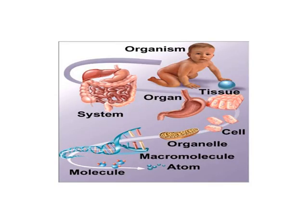Here's a picture of the hierarchy of complexity. We have a baby as an organism, then different organ systems — here showing the digestive system. Organs make up the organ system, then organs are made up of tissues, tissues made up of cells, cells made up of organelles, and so on down to the atom, which is the smallest.